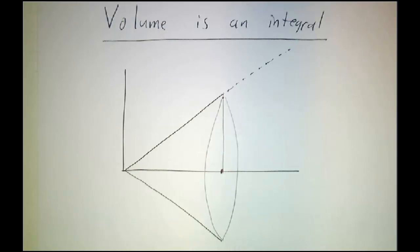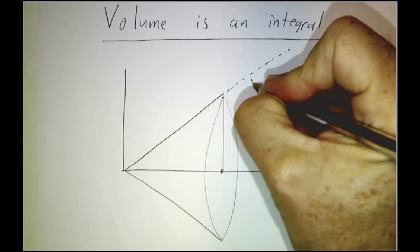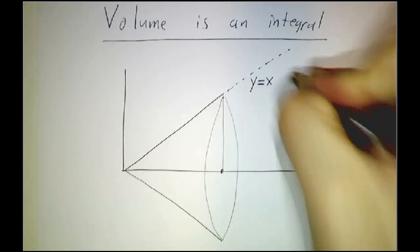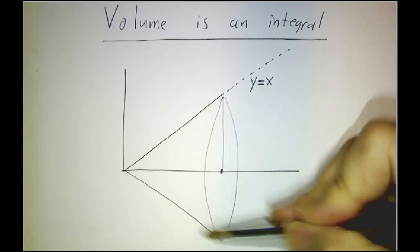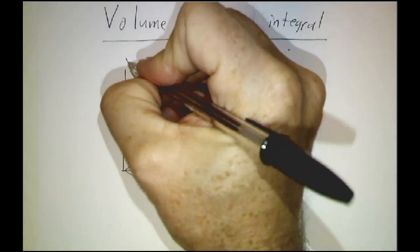We're going to figure out the volume of a cone. The way we get that cone is we take the line y equals x, we whip it around the x-axis. This is the x-axis, this is the y-axis.